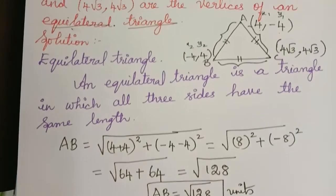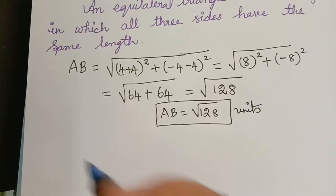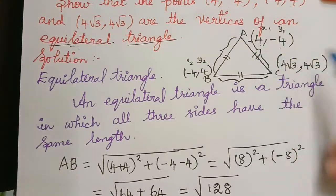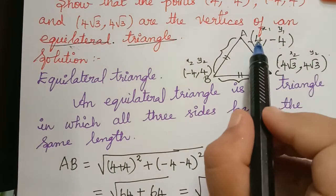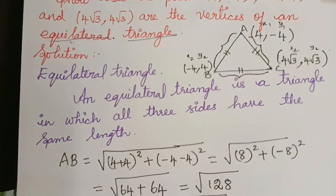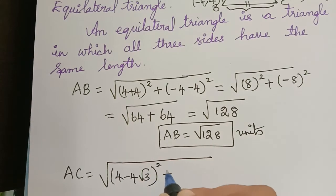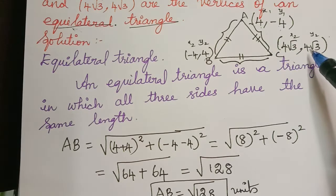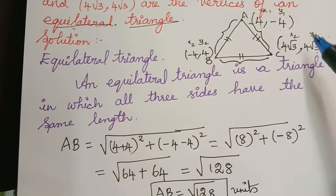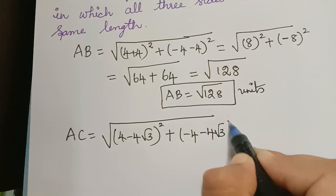Now in a similar manner we have to find the distance AC. Taking A as (x1, y1) and C as (x2, y2), the distance AC = √[(4 - 4√3)² + (-4 - 4√3)²]. So we need to evaluate (4 - 4√3)² and (-4 - 4√3)².